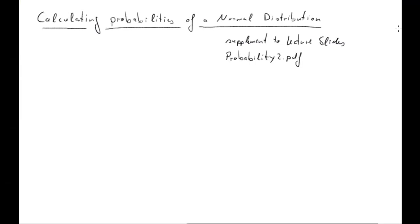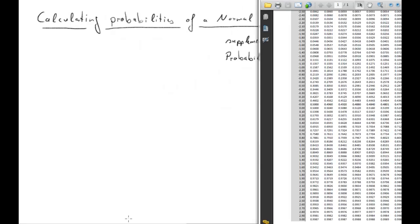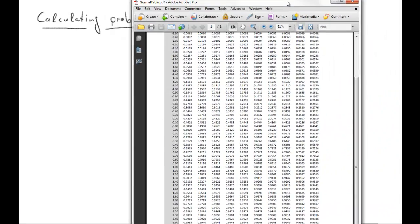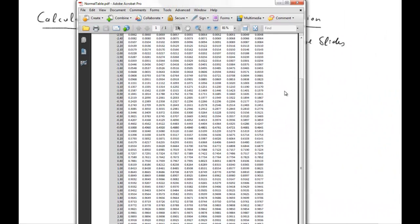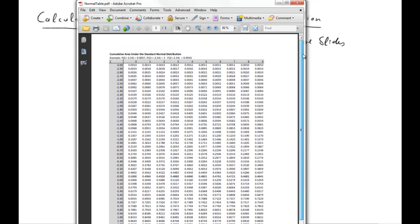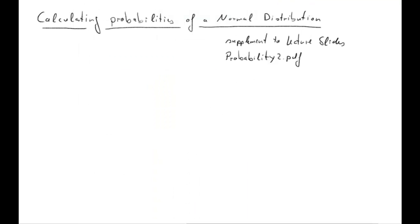In this clip I'm going to go through the details of how to calculate probabilities using the normal distribution. This is in addition to what I have in the lecture slides, probability 2 PDF. One piece of information you need to do this is a table — the normal table. This looks like this and you can get that from the Blackboard site in the topic 3 folder as a PDF file. We use this frequently as we go.